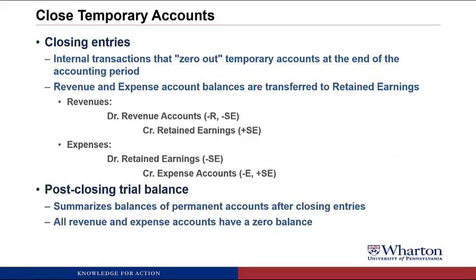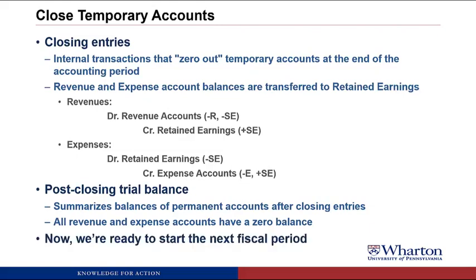After the closing entries, we do a post-closing trial balance — we add everything up to make sure our debits equal our credits. At this point, only the permanent accounts should have balances; all the revenue and expense accounts should have a zero balance. And now we're ready to start the next period.